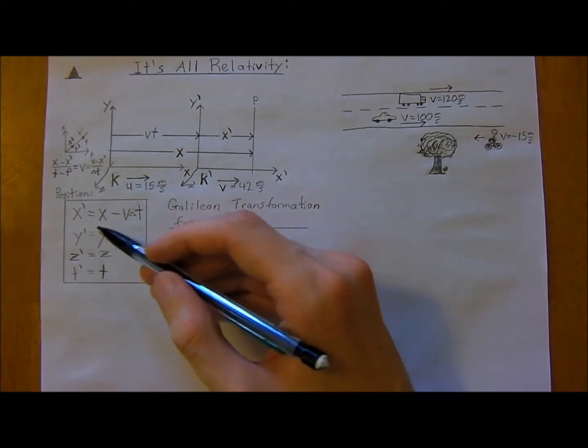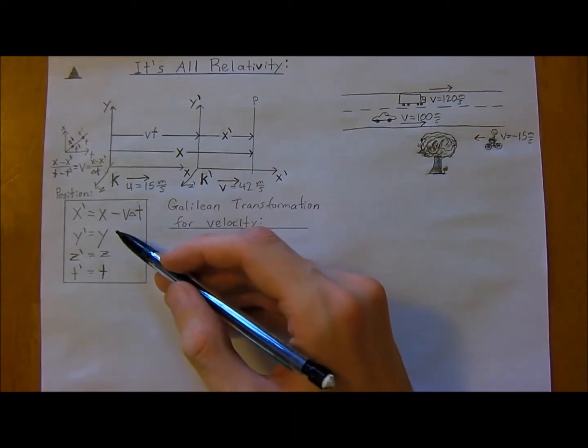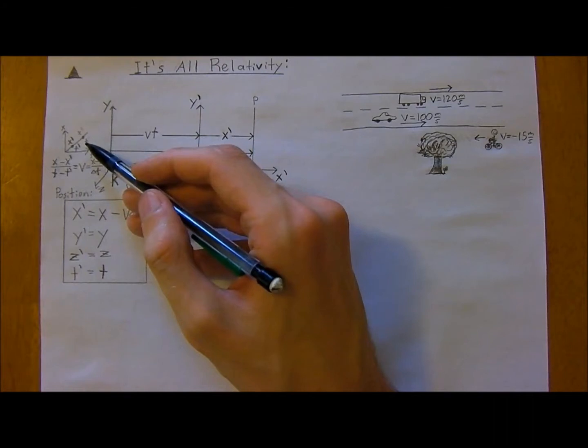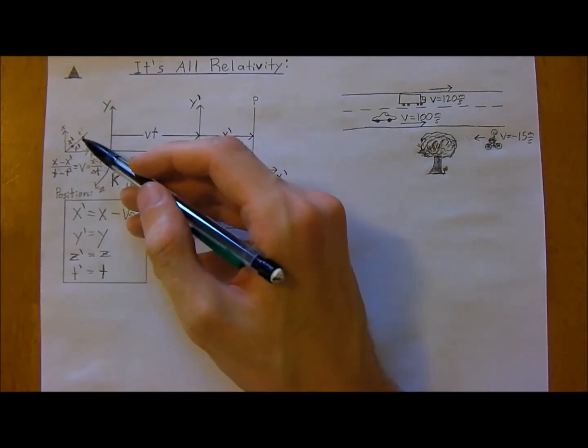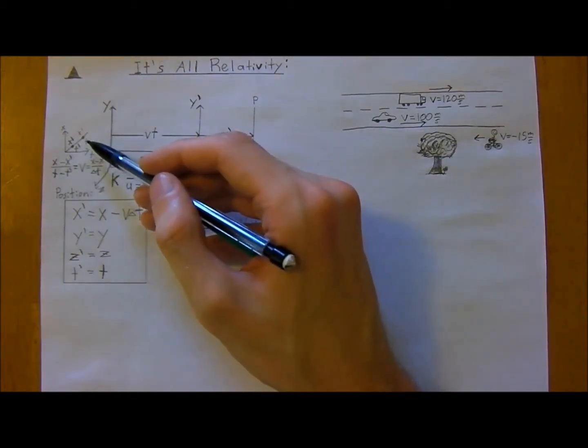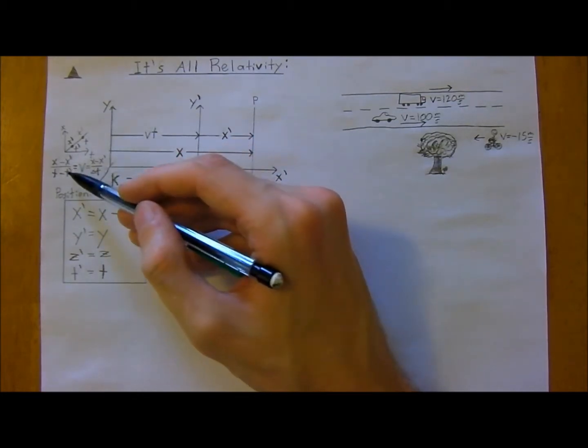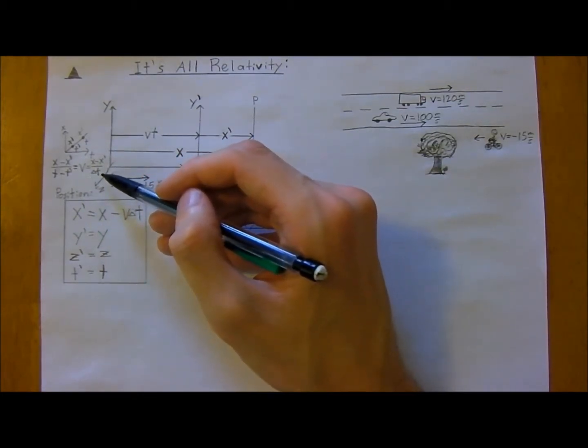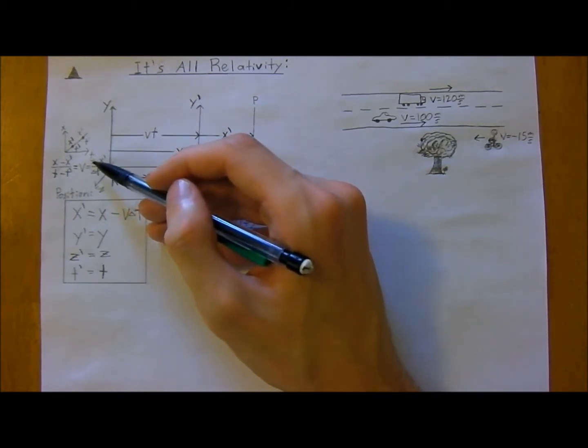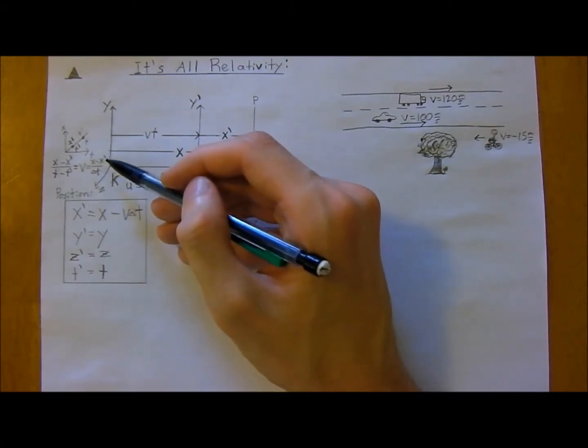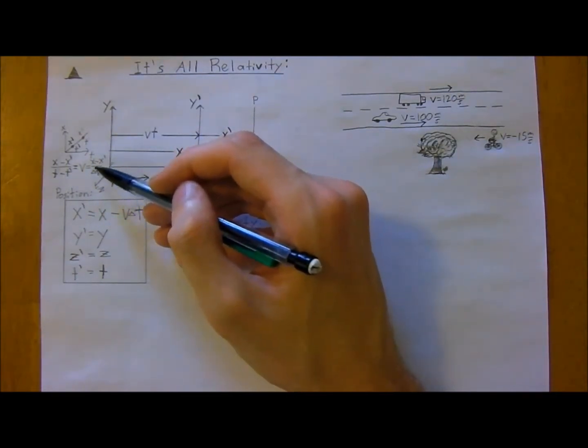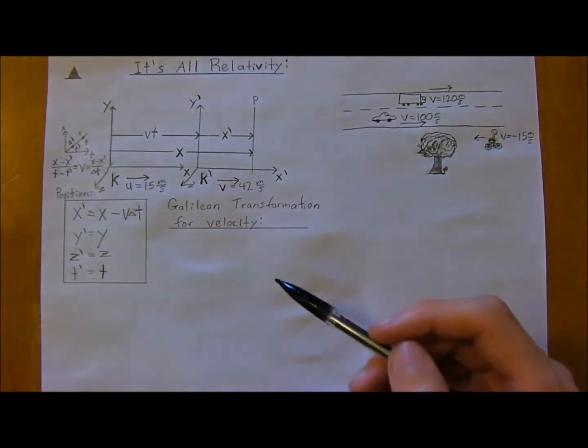So x-naught is now x minus v delta t, and this thing just comes from, remember, the slope of a position versus time graph will give you your velocity. So x minus x-naught over t minus t-naught gives you your velocity, and we can write t-naught as just change in time or delta t. And so you bring, multiply both sides by delta t, subtract off x, and then you're left with a negative x-naught, so you want to flip the sign, so you multiply by negative one on both sides, and then you're left with this equation.